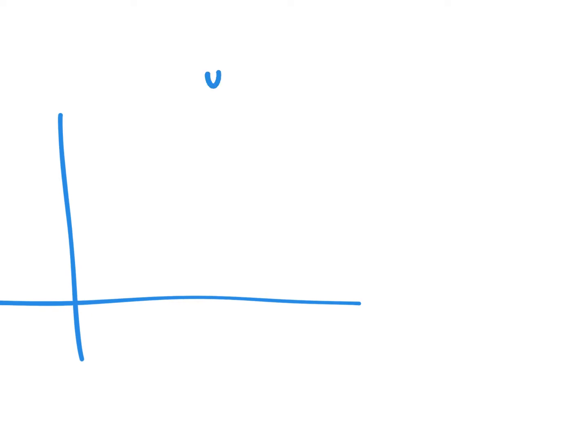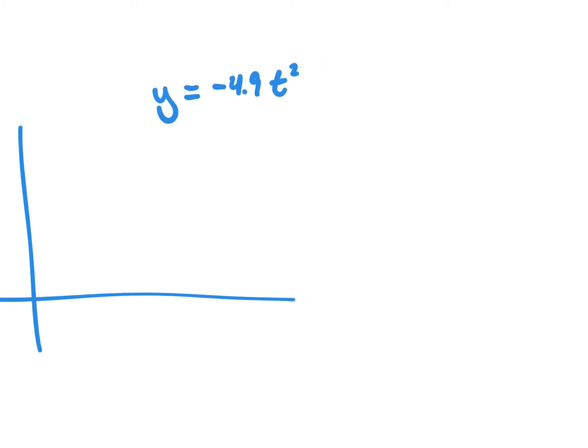Let's do a couple of problems related to quadratics — this whole unit is about quadratics. If I give you y equals negative 4.9t squared — don't let it alarm you that I've changed it from x to t, just a swap — and if I say plus 2t, you know that you threw the ball at a velocity of 2 meters per second. And this time I'm going to start with a starting height of 1 meter off the ground.